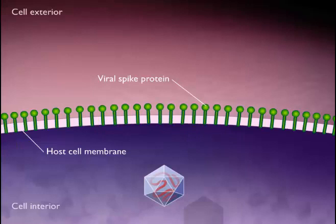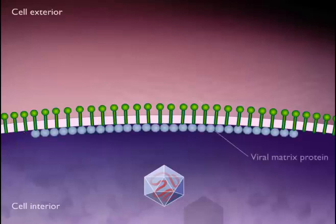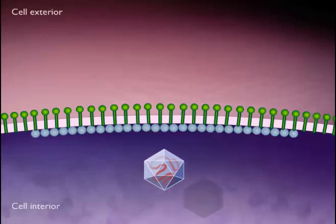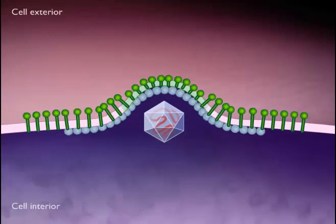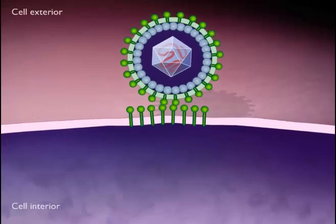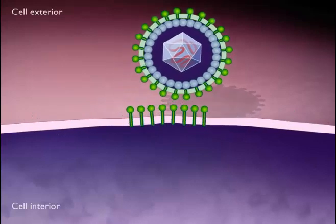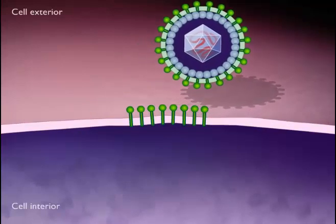Next, the inside of the host cell membrane becomes coated with viral matrix protein. The viral capsid then becomes completely enclosed by the region of the cell membrane into which the spikes and matrix protein are embedded, and the virus is released by budding.